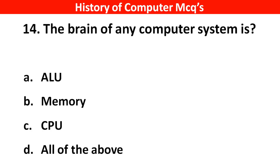Next question. The brain of any computer system is — Options A: ALU, B: Memory, C: CPU, D: All of the above. Right answer is option C, CPU.